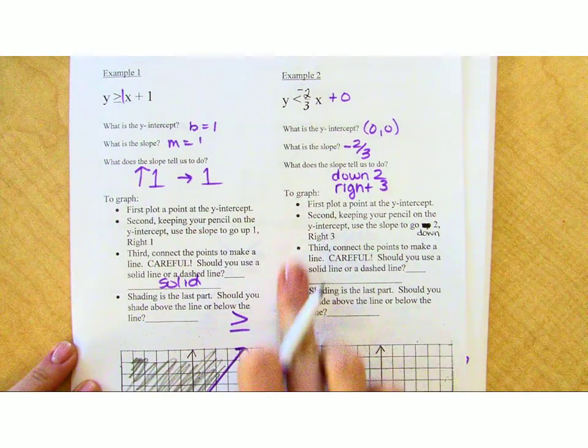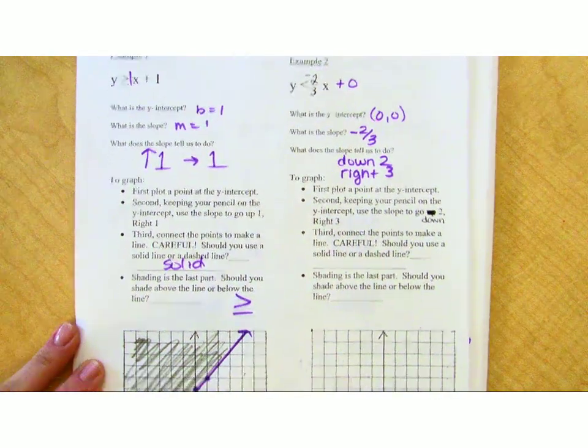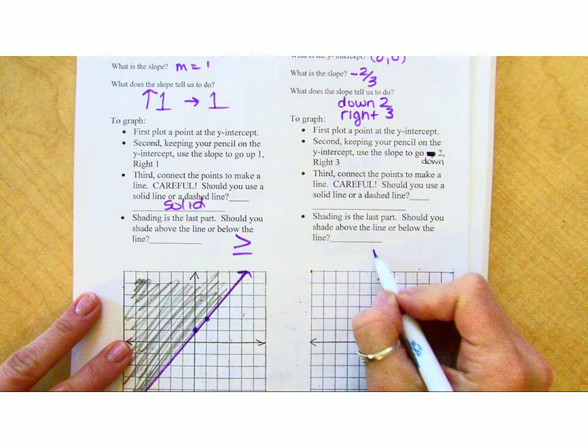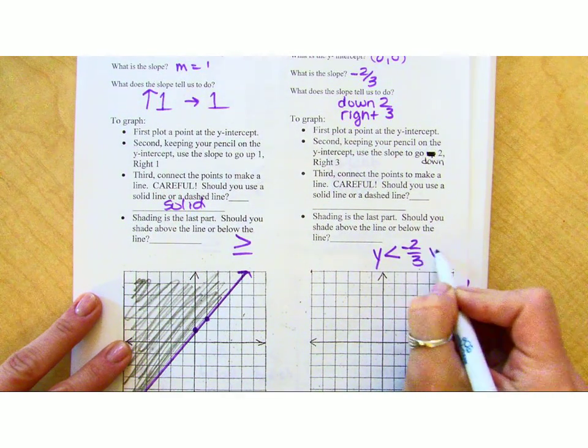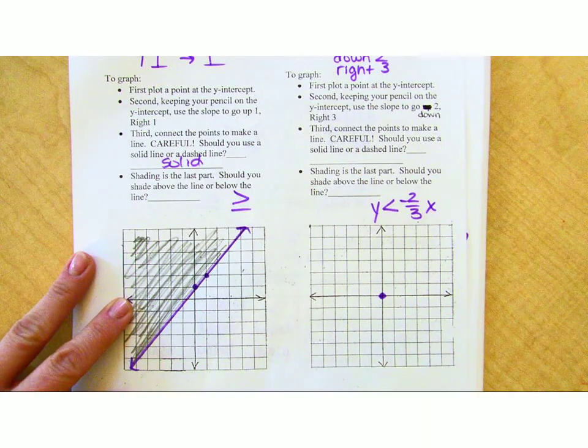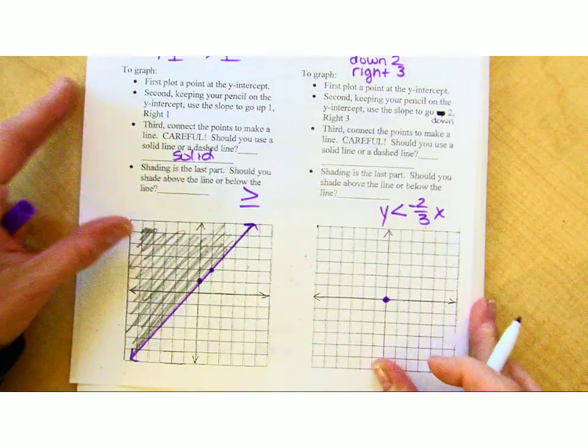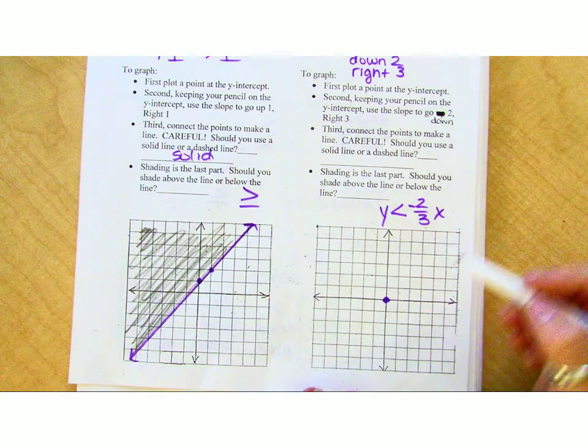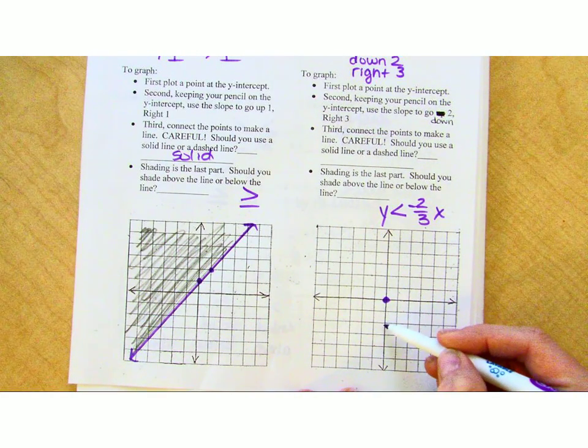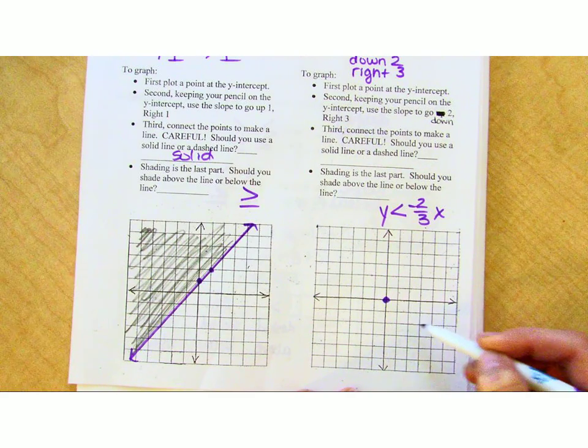I don't really need this part. This is a guided part that might be a good review, but we don't need it. So I need to graph the line less than negative two-thirds x. So where am I beginning? From there, where am I moving? You just told me up here. Go down two, right three.